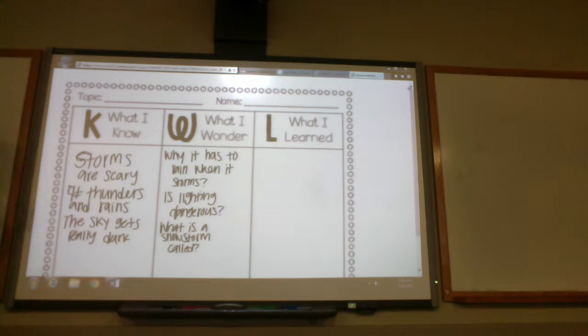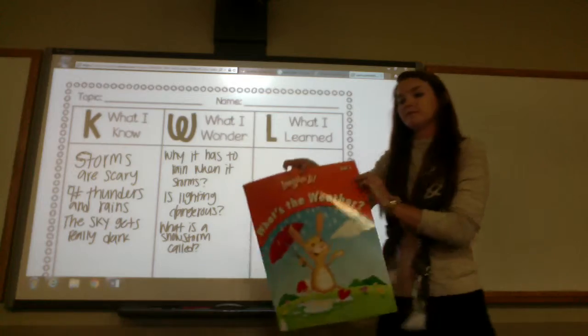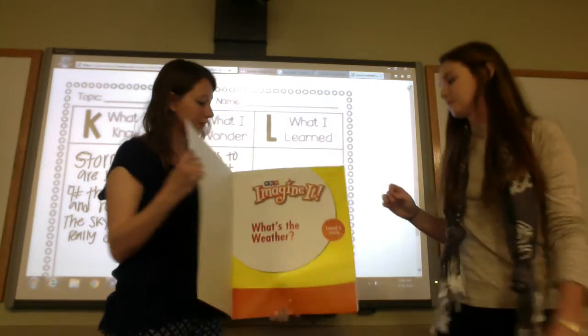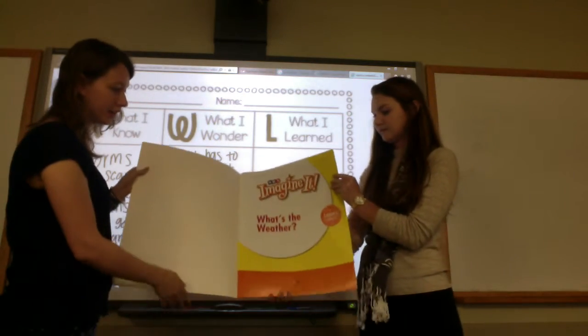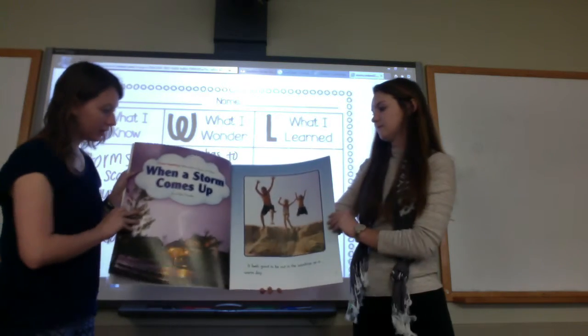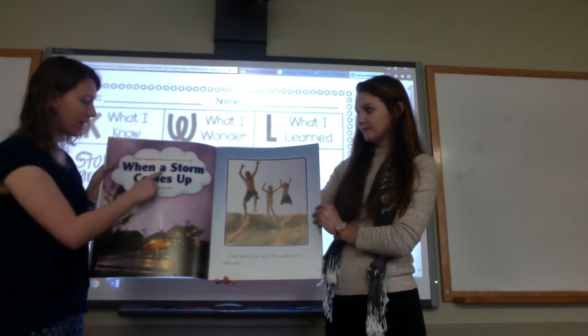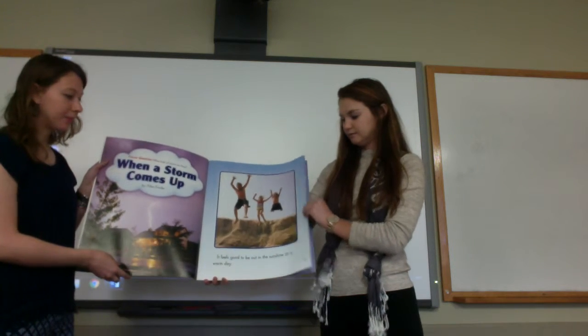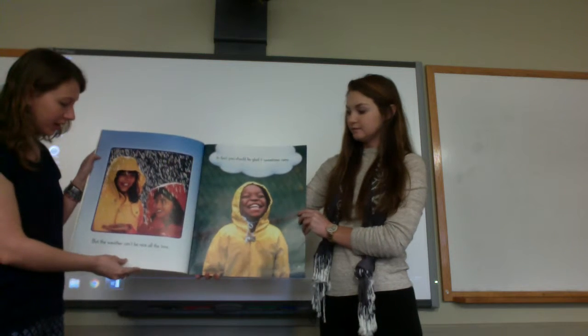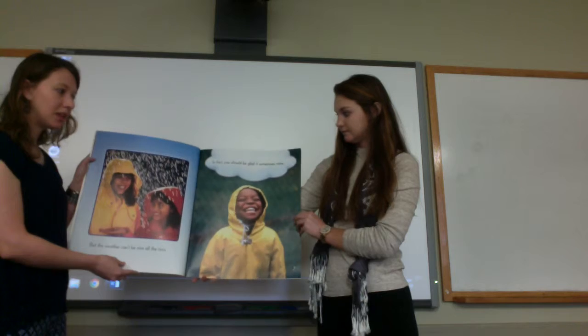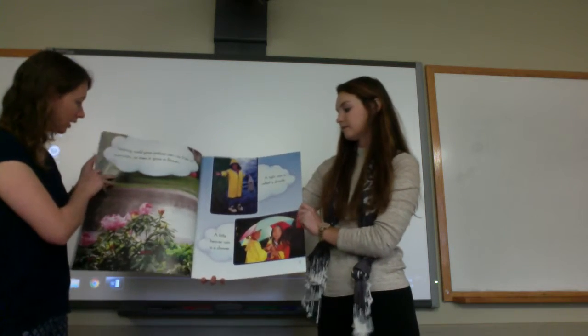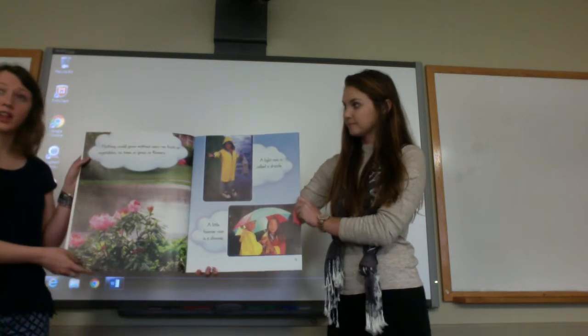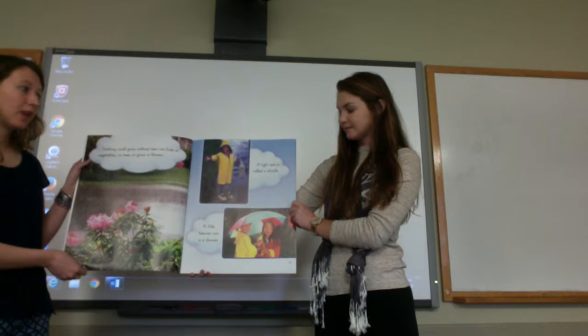Okay, so now that we have filled out our chart we are going to read a book about storms and see what we can learn about storms. So we're going to read the book What's the Weather. What's the Weather has a smaller story inside of it and this one is called When a Storm Comes Up by Alan Fowler. It feels good to be out in the sunshine on a warm day, but the weather can't be nice all the time. In fact you should be glad it rains sometimes. Nothing could grow without rain, no fruits or vegetables, no trees or grass or flowers.